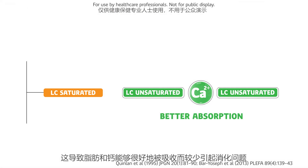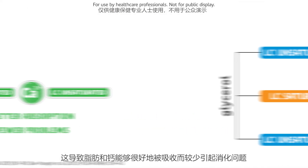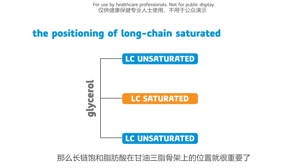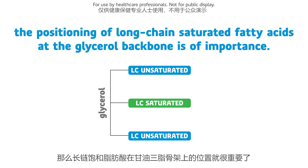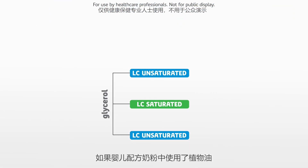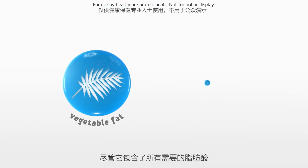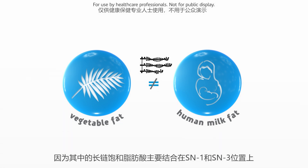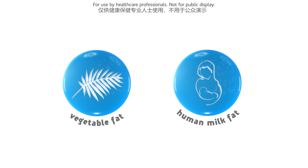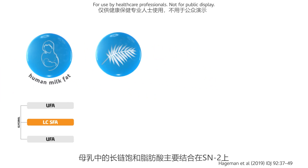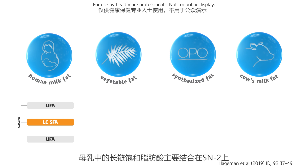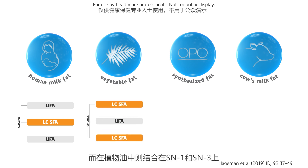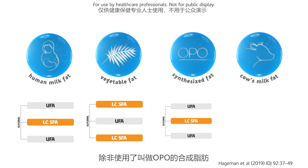This results in better absorption of the fat and calcium and fewer problems. Therefore, the positioning of long-chain saturated fatty acids at the glycerol backbone is of importance. In infant formula, vegetable fat is used. Although all the required fatty acids are present, the fat structure of vegetable fat is unfavorable, since the long-chain saturated fatty acids are mainly positioned at the SN1 and SN3 positions. In human milk, long-chain saturated fatty acids are mainly present at the SN2 position. In vegetable fat, they are at the SN1 and SN3 positions, unless a synthesized fat source is used, called OPO.